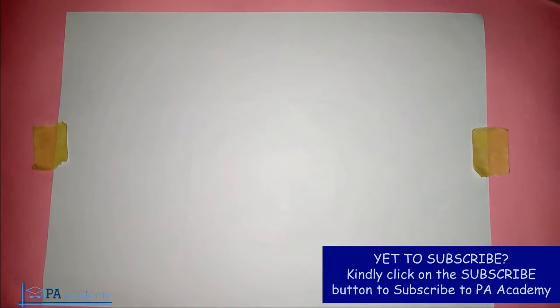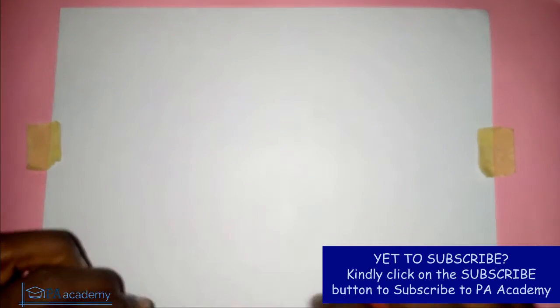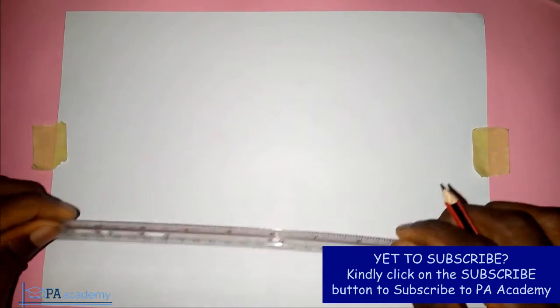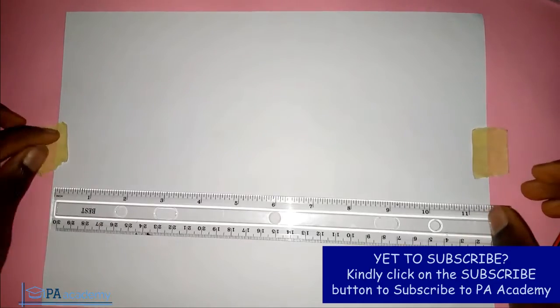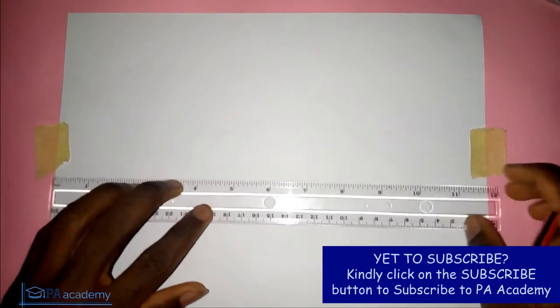Hello and welcome to PA Academy. In this video I'm going to show you how to draw a parallel line. When you are given a straight line and you want to draw another line that is parallel to it, how do you go about it? The first thing you are going to do is draw the given straight line.